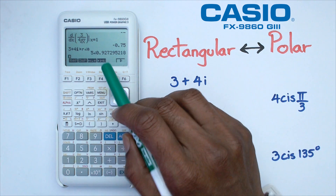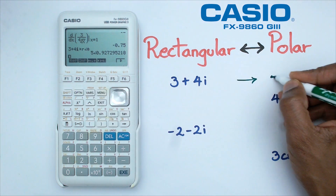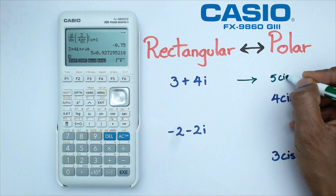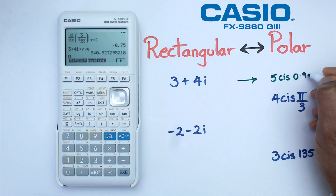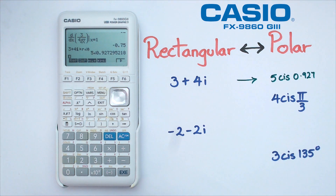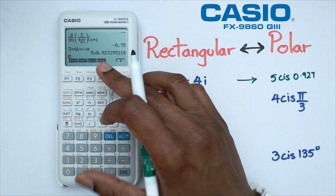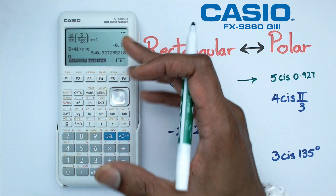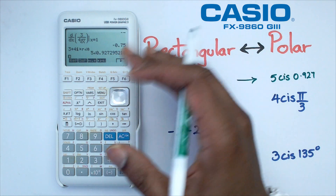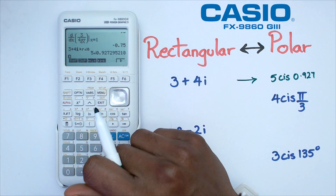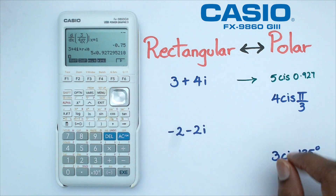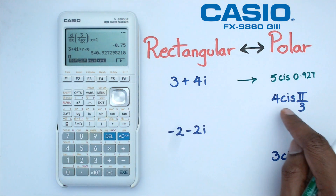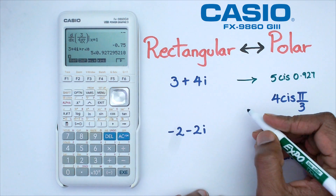So we're going to click on this and press enter. Right now this has given us the modulus, which is 5, so this is going to be 5 cis, and the angle is going to be 0.927. Now if this was a nice angle like pi over 3 or pi over 4 it usually gives that, but in this case I've made a more difficult question, so that's why we're getting a strange looking angle — but that's still correct.